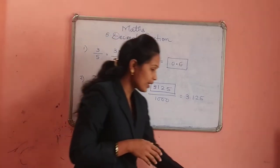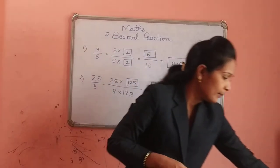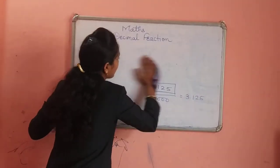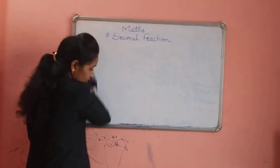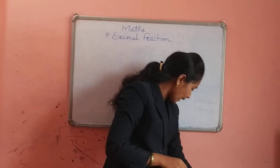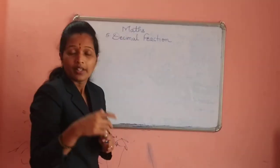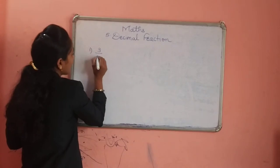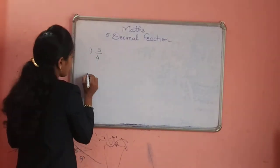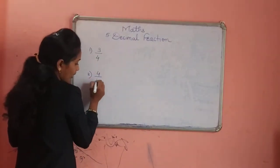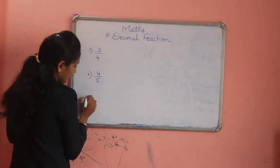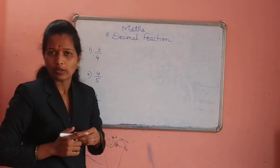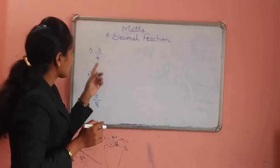By the same way we have to solve question number 2. Now pay attention to question number 2. The instruction is: convert the common fraction into decimal fraction. The first number is 3 upon 4, the second is 4 upon 5, and the third is 9 upon 8. The remaining examples you have to solve yourself.